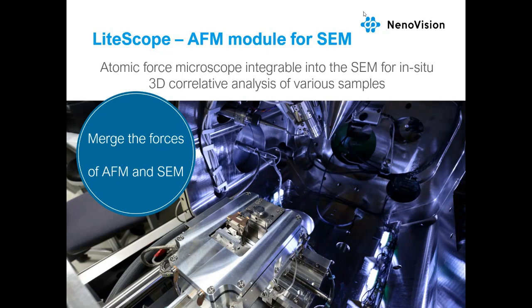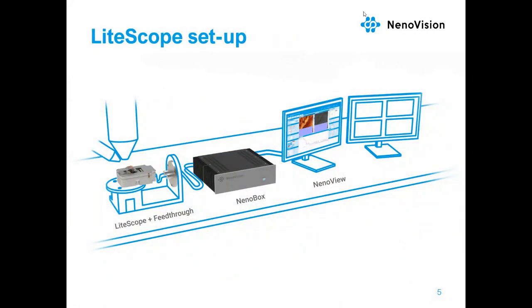Correlative sample analysis combining atomic force microscopy and scanning electron microscopy is achieved by integrating the compact atomic force microscope called LightScope into the scanning electron microscope chamber. Integration is quite easy — LightScope is installed on the SEM stage, and the signal goes to the controller NanoBox, which is accessible via Wi-Fi or internet. Both SEM and AFM software are operated from the same computer.